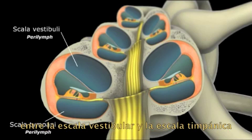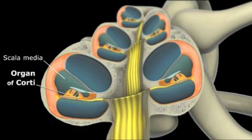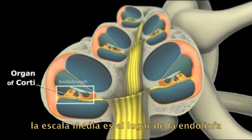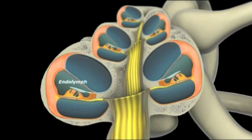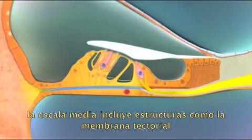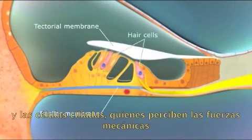Between the scala vestibuli and scala timpani is the scala media. This houses the organ of Corti, which is referred to as the receptor organ of hearing. The scala media is filled with endolymph and includes structures from the tectorial membrane, basilar membrane, and hair cells, which sense the mechanical forces.